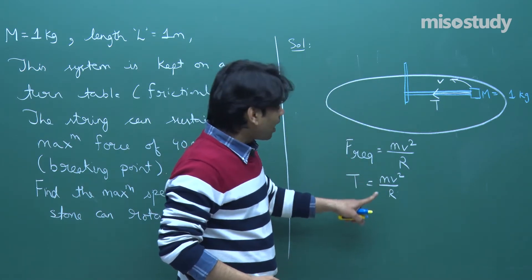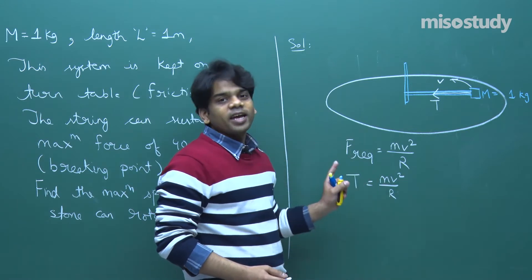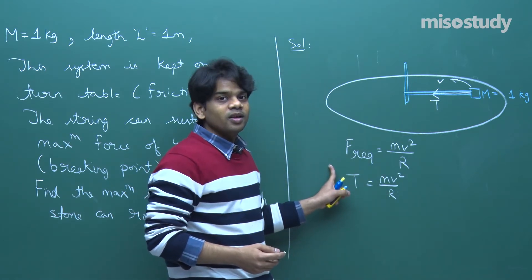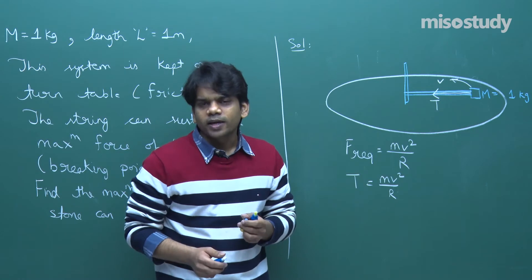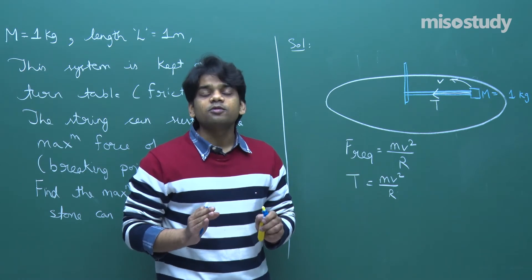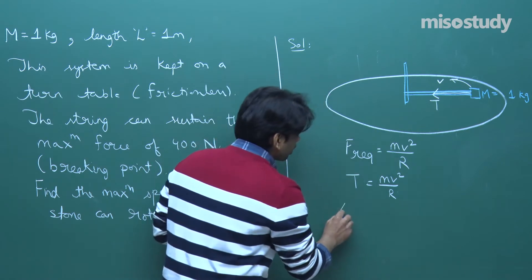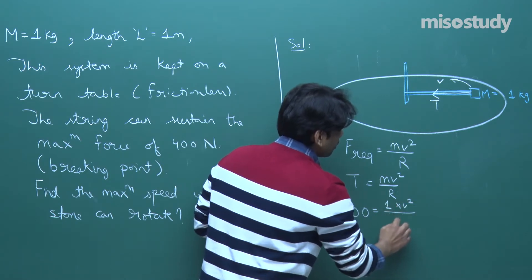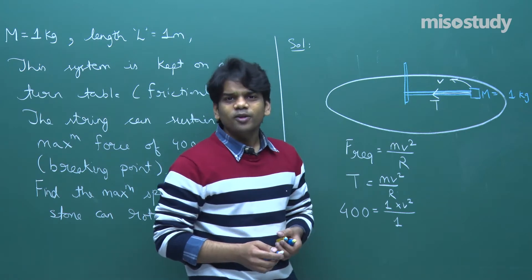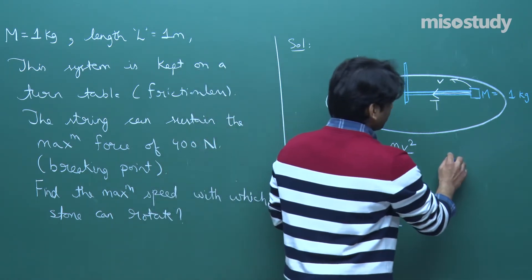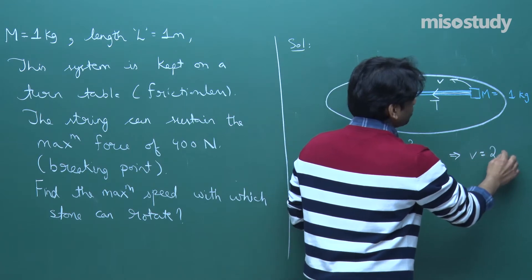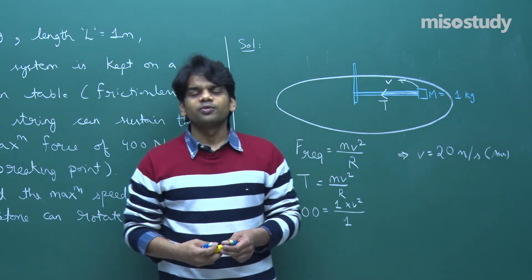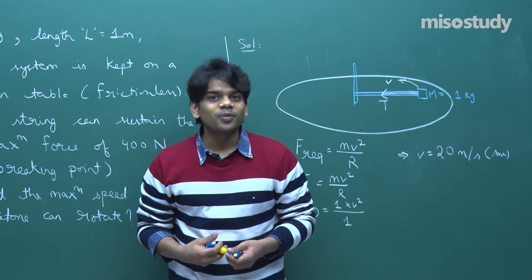m is fixed at 1 kg and R is fixed at 1 m. As v increases, tension increases. Since the breaking point is 400 N, we set tension = 400 N. That gives 400 = 1 × v² / 1, so v = 20 m/s. This is the maximum speed with which the stone can rotate. A very simple question.